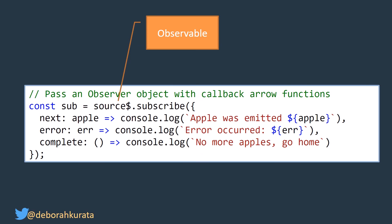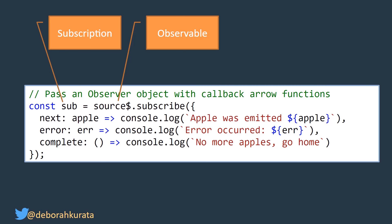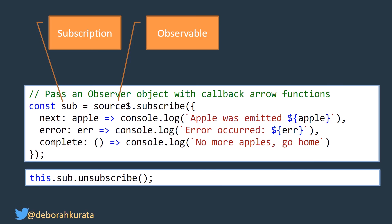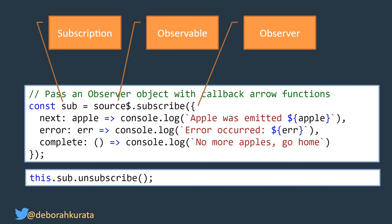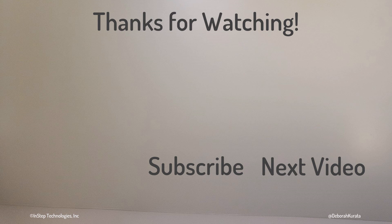Looking at our set of code, our source$ is an observable. We have a dollar sign on the end to identify it as an observable, so we can tell it's not an array or some other kind of data structure. The subscription is what we get when we call subscribe, and then we can use it to unsubscribe. We're passing in our observer with our next, error, and complete. If you like this video, please like and subscribe.